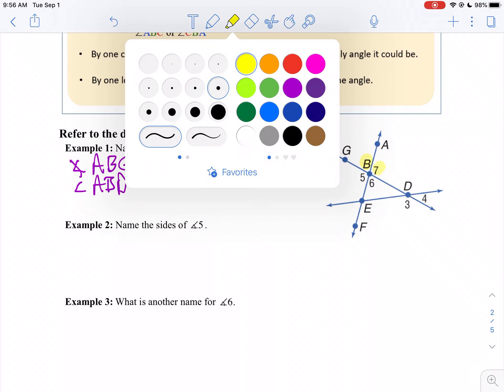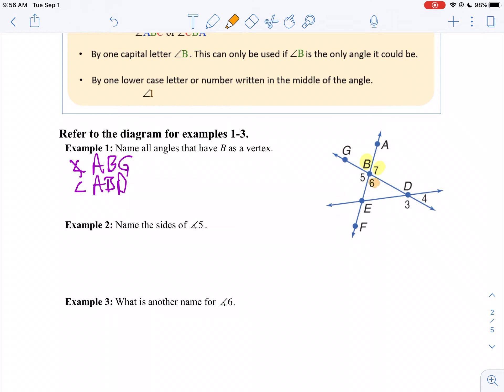Let me switch colors on you here. Let's go angle DBE. Notice I'm going D to B to E, so I'm naming that angle there. So angle DBE.